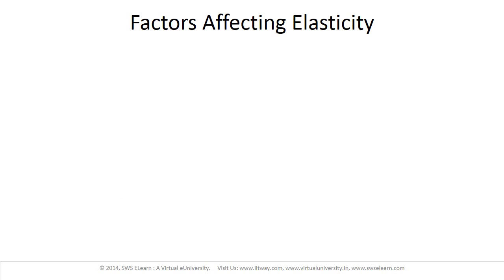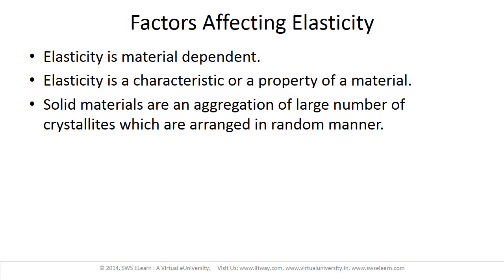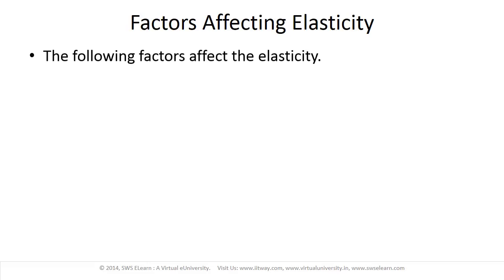Let us now look at the factors that affect elasticity. Elasticity is material dependent, meaning the elasticity of a given material is constant but differs for different materials. Thus, elasticity is a characteristic property of a material. Solid materials are aggregations of large numbers of crystallites arranged in a random manner, and the structure of the material determines its elastic property.